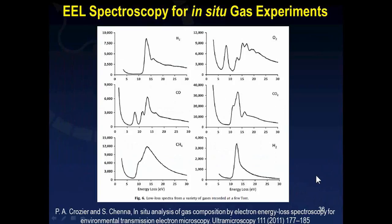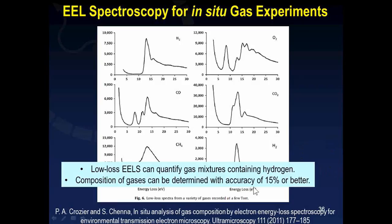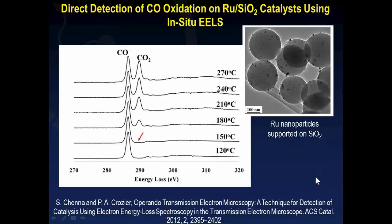For gas-associated experiments, electron energy loss spectroscopy is a very powerful method to study gas types and gas mixtures. Work by Professor Peter Crozier's group at Arizona State University has shown that low-energy loss spectra provide a unique fingerprint for different types of gases, with composition measurements accurate to 15% or better. Using EELS, one can also detect in situ the oxidation of carbon monoxide to carbon dioxide by monitoring the emergence of the carbon pi-star peak associated with CO₂ at increasing temperatures.